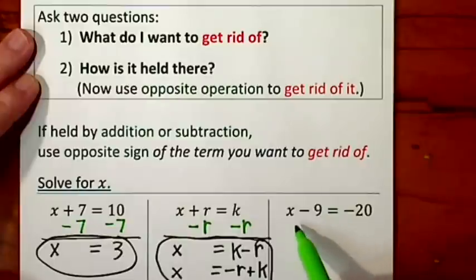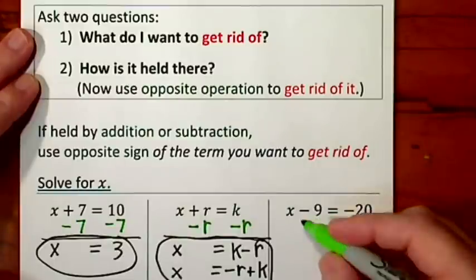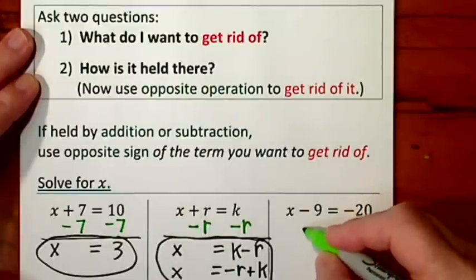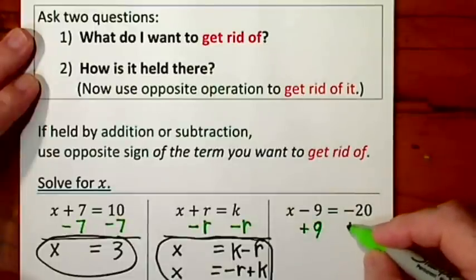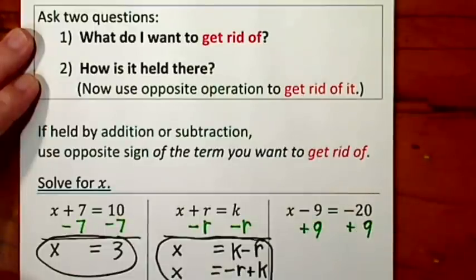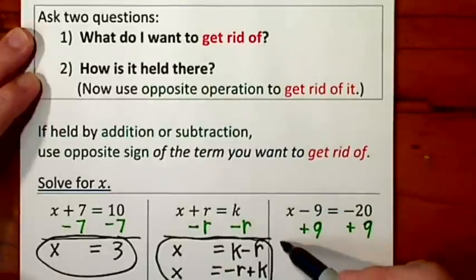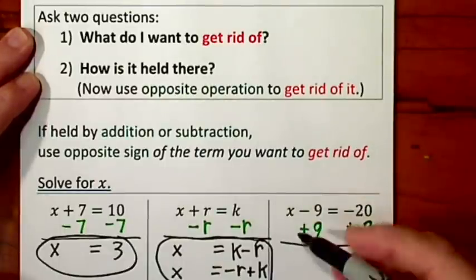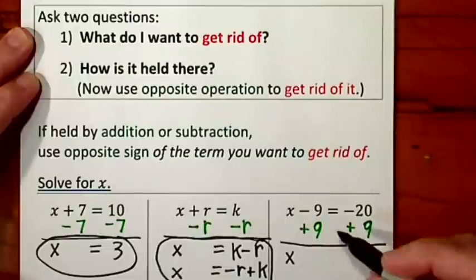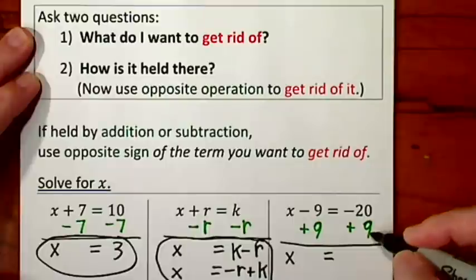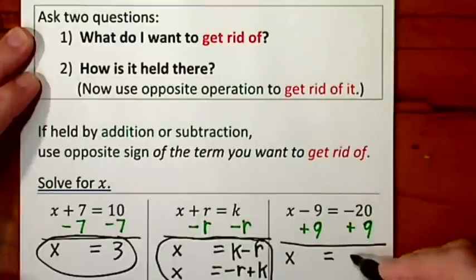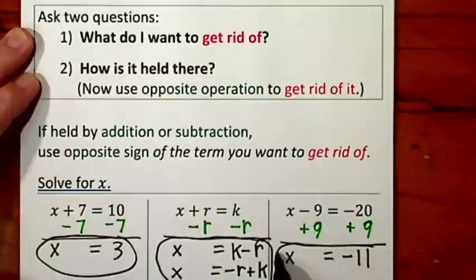Turning our attention over here, I want to get rid of a negative 9. It's held by addition or subtraction, so I'll put a positive 9 underneath it. I go to the other side of the equal sign and put a positive 9. Draw a line and bring everything down. This leaves x by itself — that's a 0, I don't have to write it. Negative 20, positive 9: signs are different, you subtract, keep the sign of the larger. So the solution is x equals negative 11.